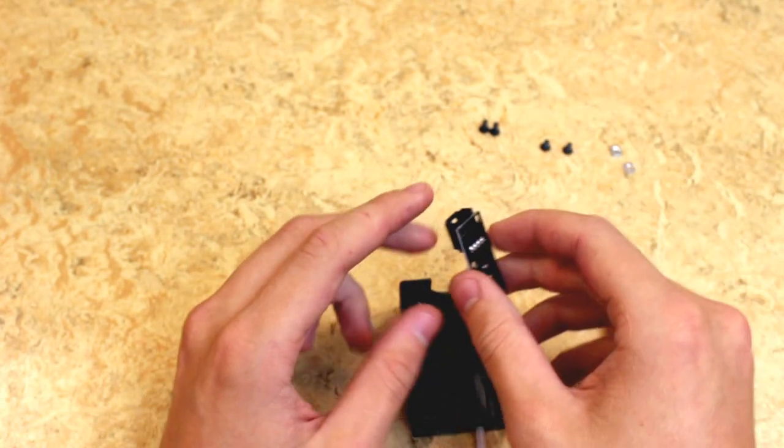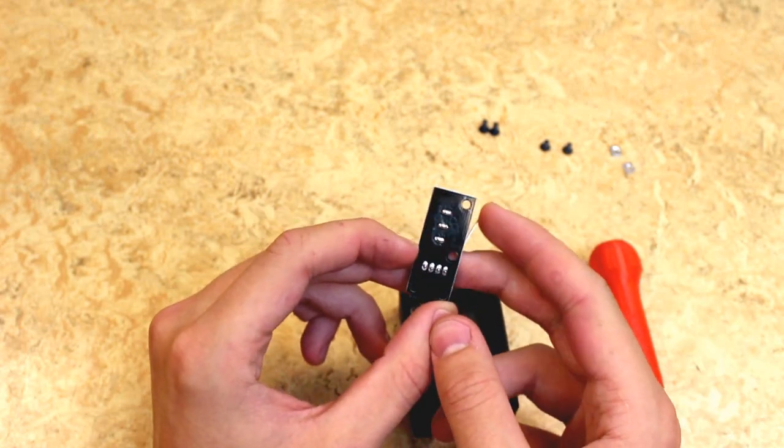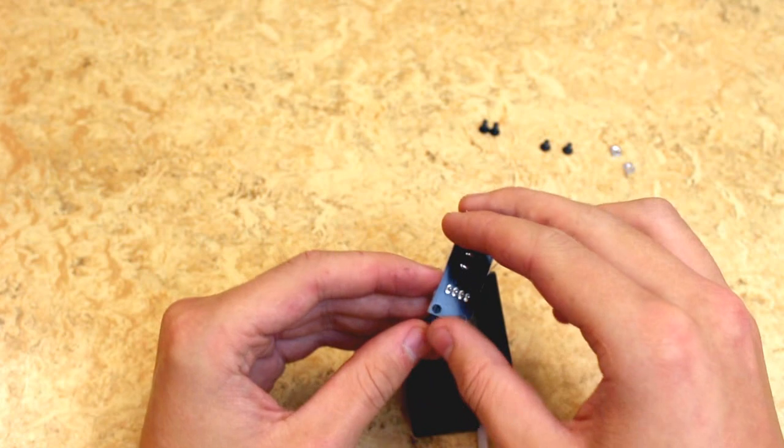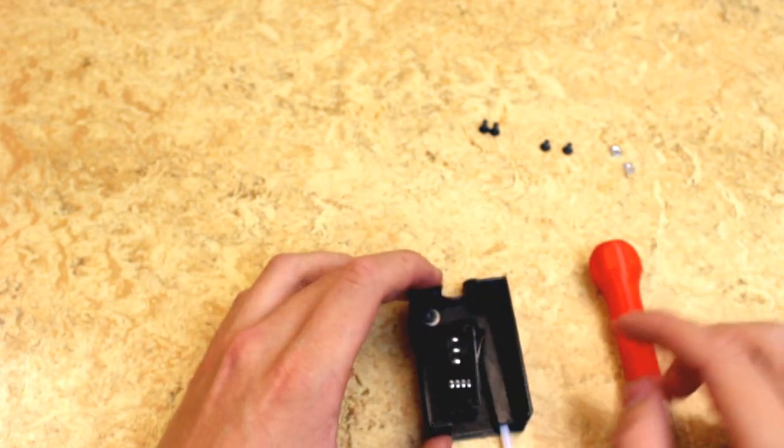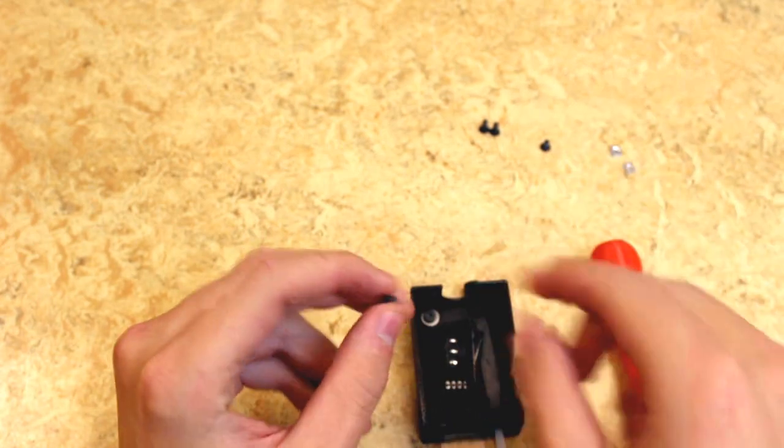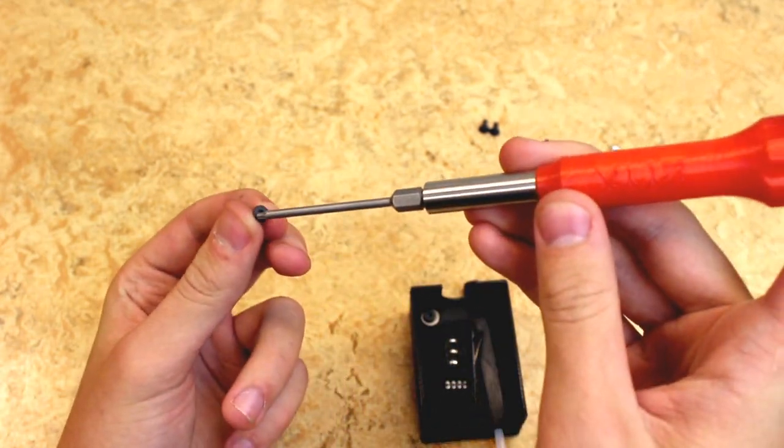Take the end stop switch and place it as shown, so the holes on the chip match the holes on the casing. Now take the other two small screws and screw them in so the chip is tightly in place.